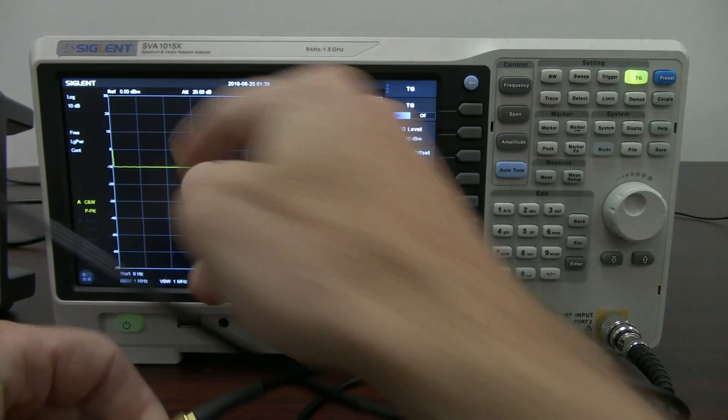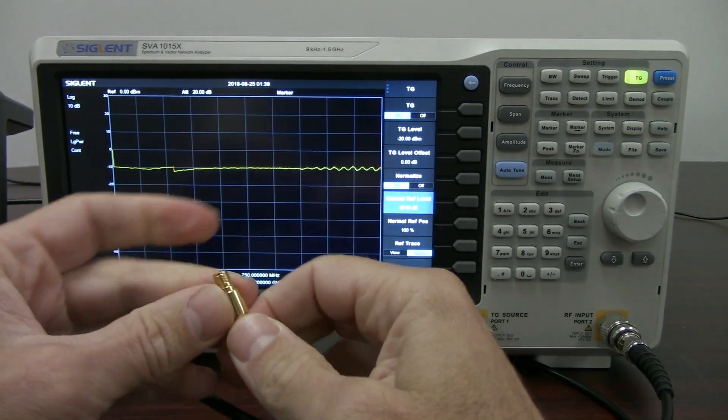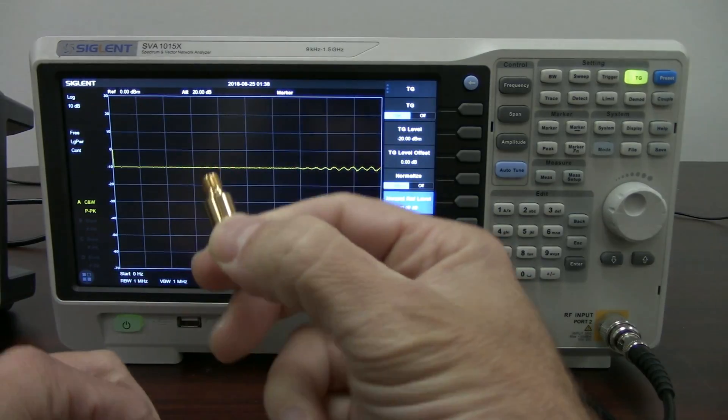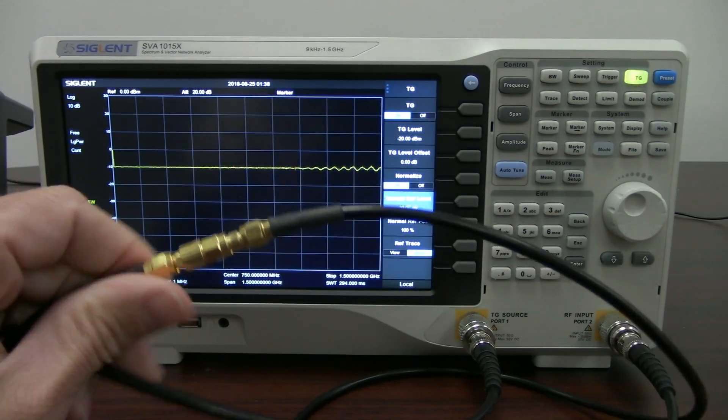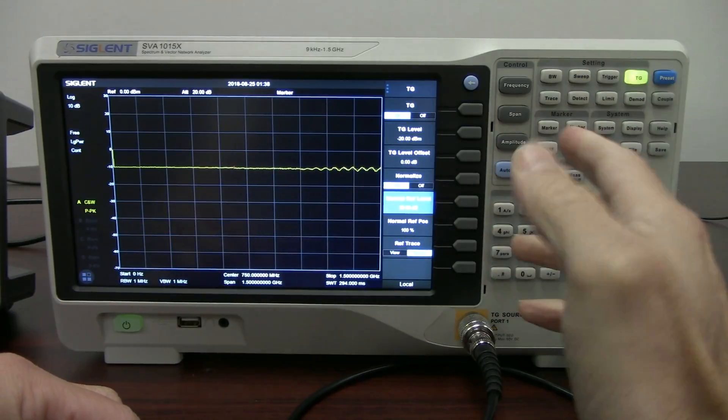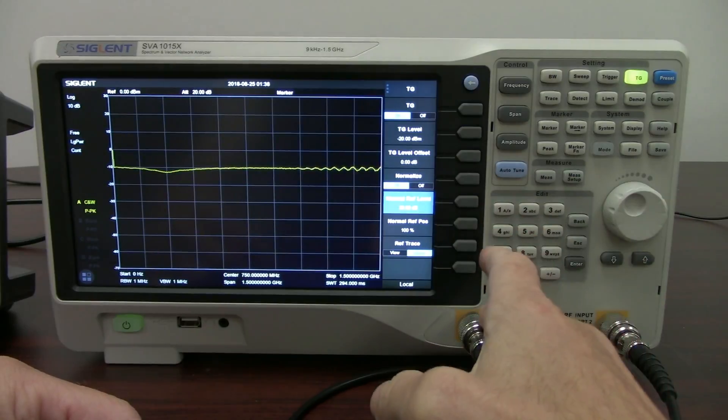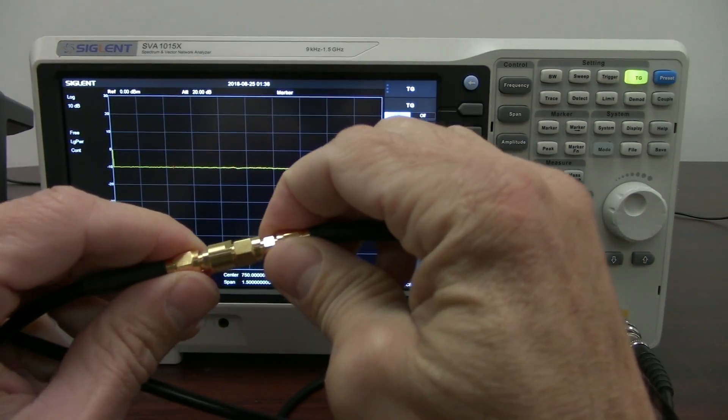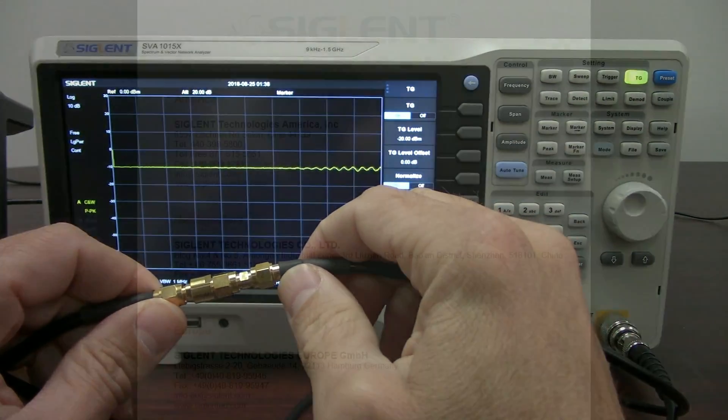And there we are. So we've got this is at minus 10 dBm. So we now have characterized our attenuators, or at least verified that they are correct. This is the 20 dB attenuator, and now we've got the 10 dB attenuator. So using a spectrum analyzer with a tracking generator, or in this case our SVA, with the tracking generator, we can take a closer look at our devices like attenuators, and we can make sure that they're operating correctly.